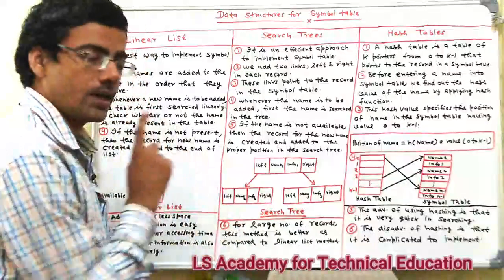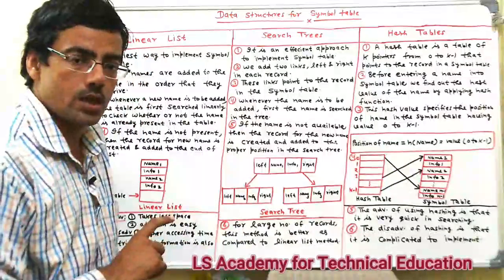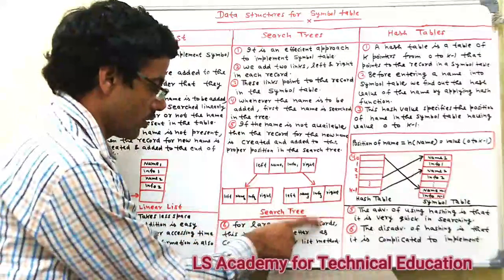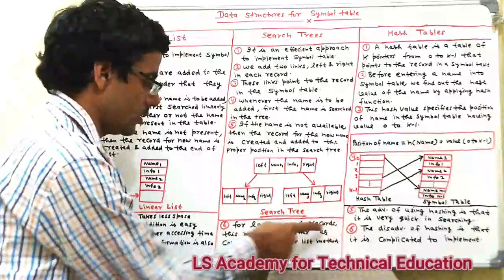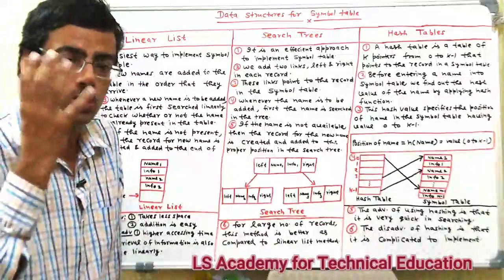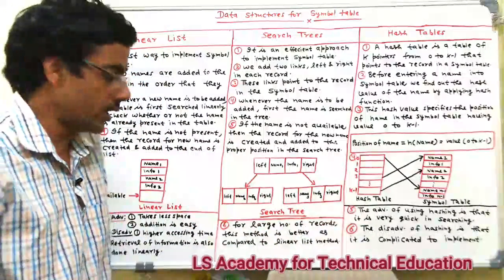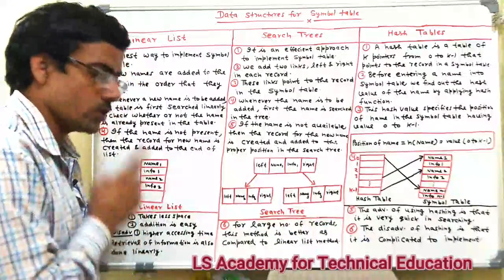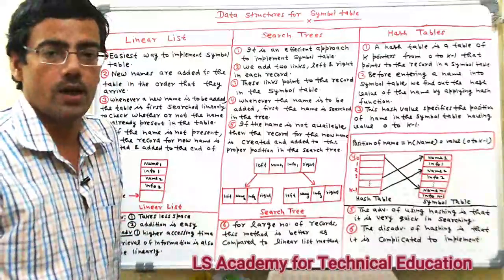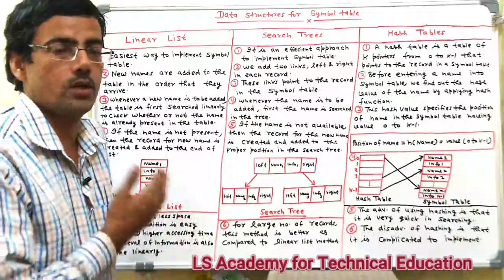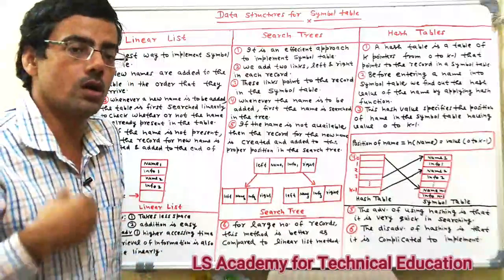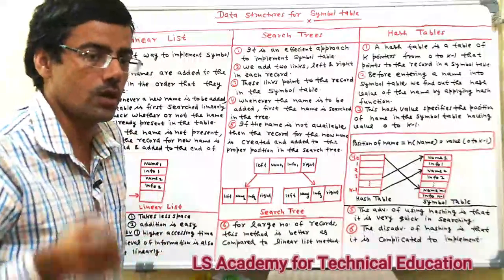The advantage of the search tree is that for a large number of records, this method is better compared to the linear list. It takes relatively less time compared to the linear list when the number of records is very large.